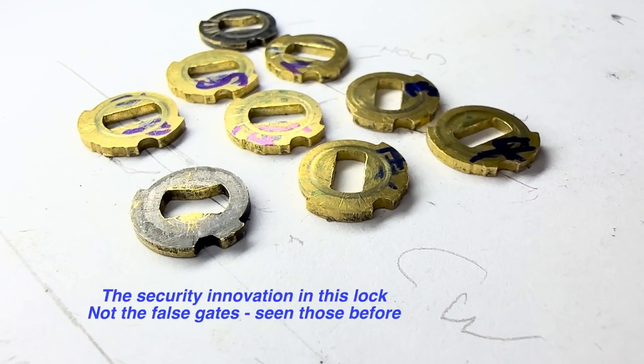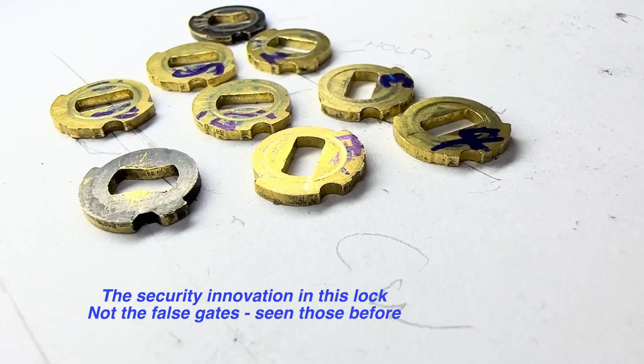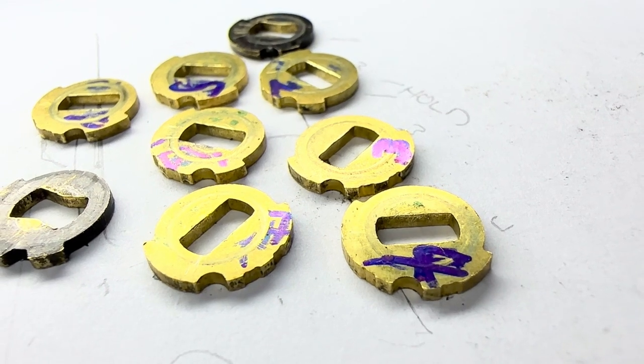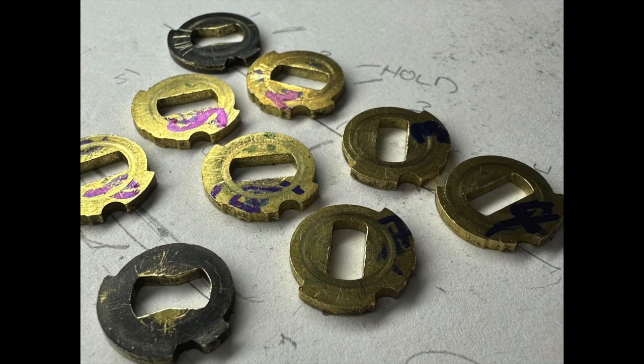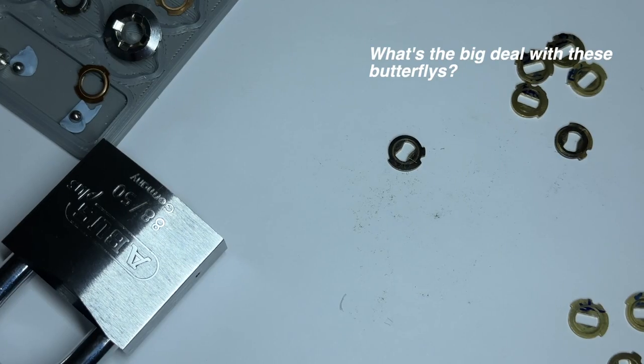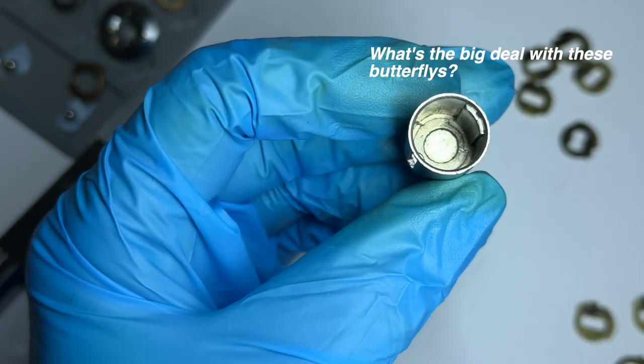So what do we know about this that makes people kind of go, oh, this is a tougher disk detainer lock. What's those butterfly disks? We're going to talk about those in a second. And they're called that because these are supposed to be shaped like little butterfly wings. So what's the deal with these things?